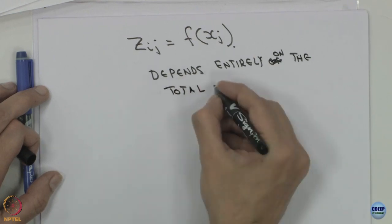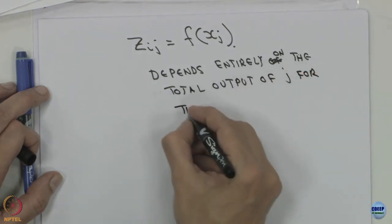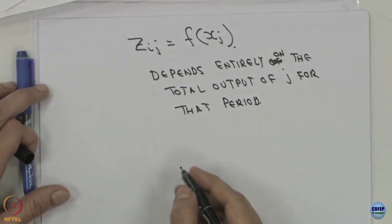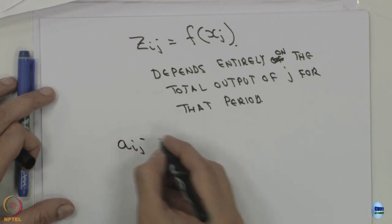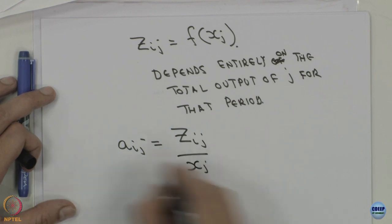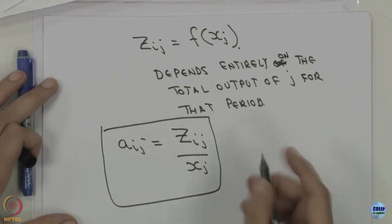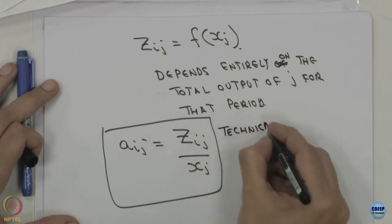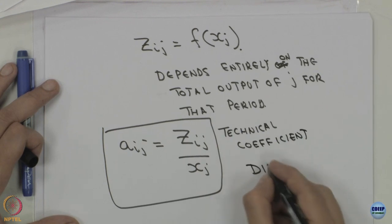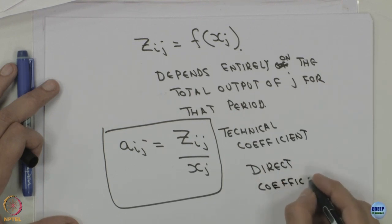This is the total output of j for that period. So we define the coefficient a_ij as z_ij divided by x_j. In the input-output method, this coefficient is assumed to be constant. This is the technical coefficient, also known as the direct coefficient.